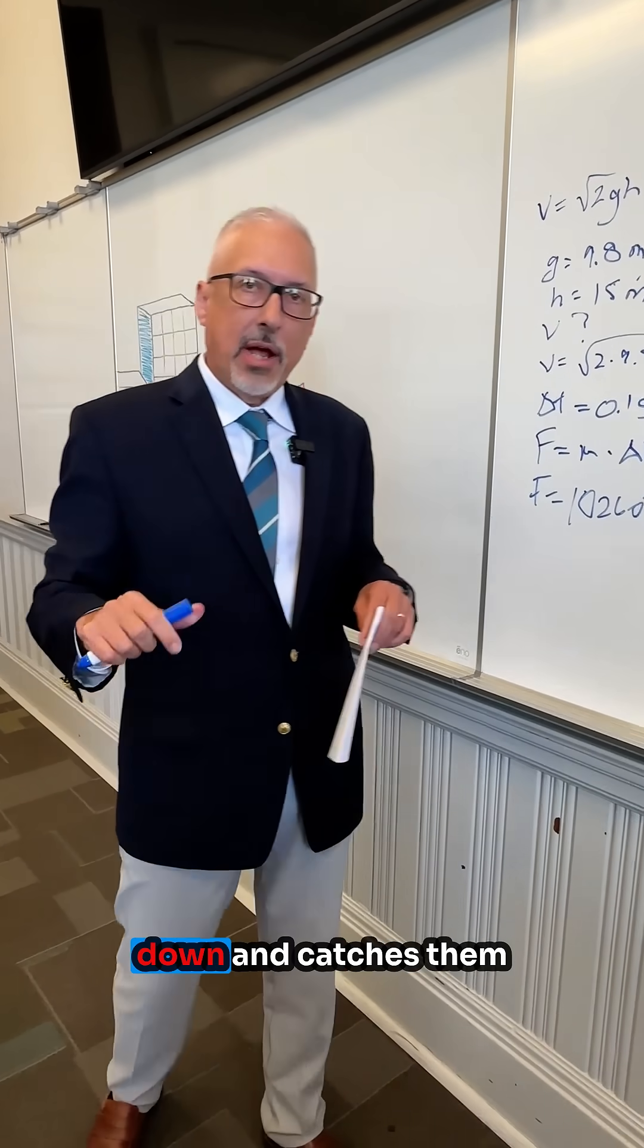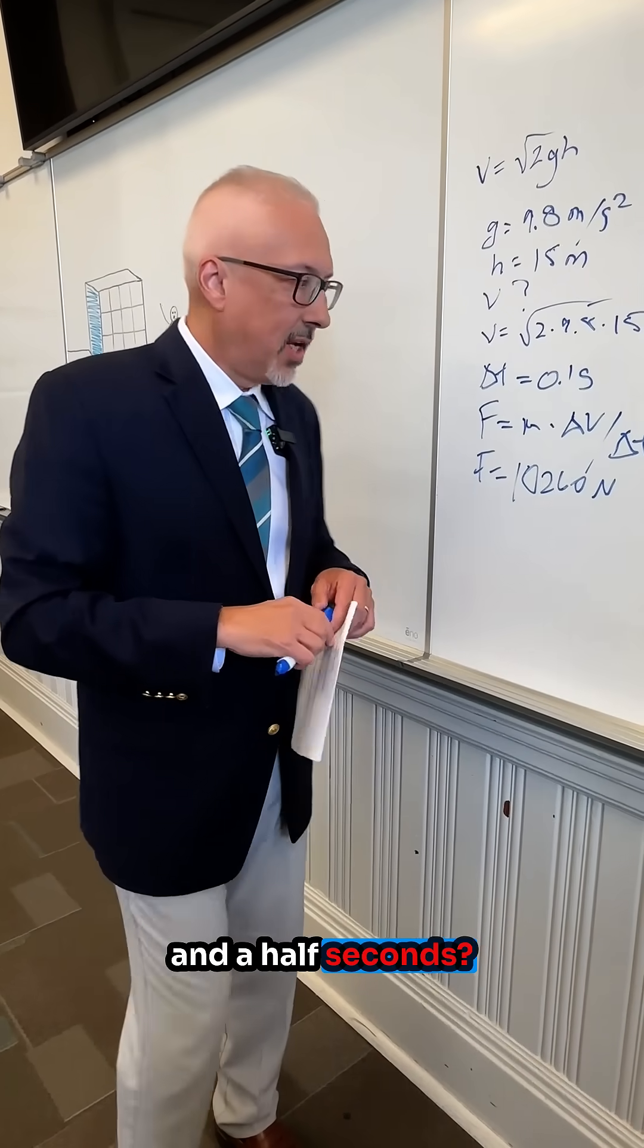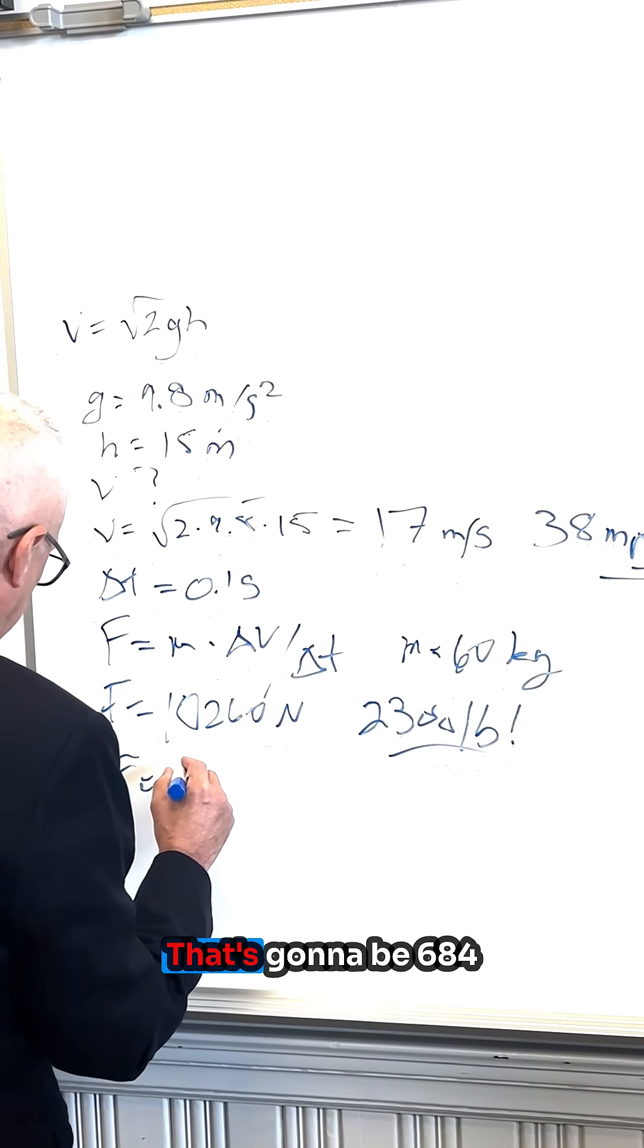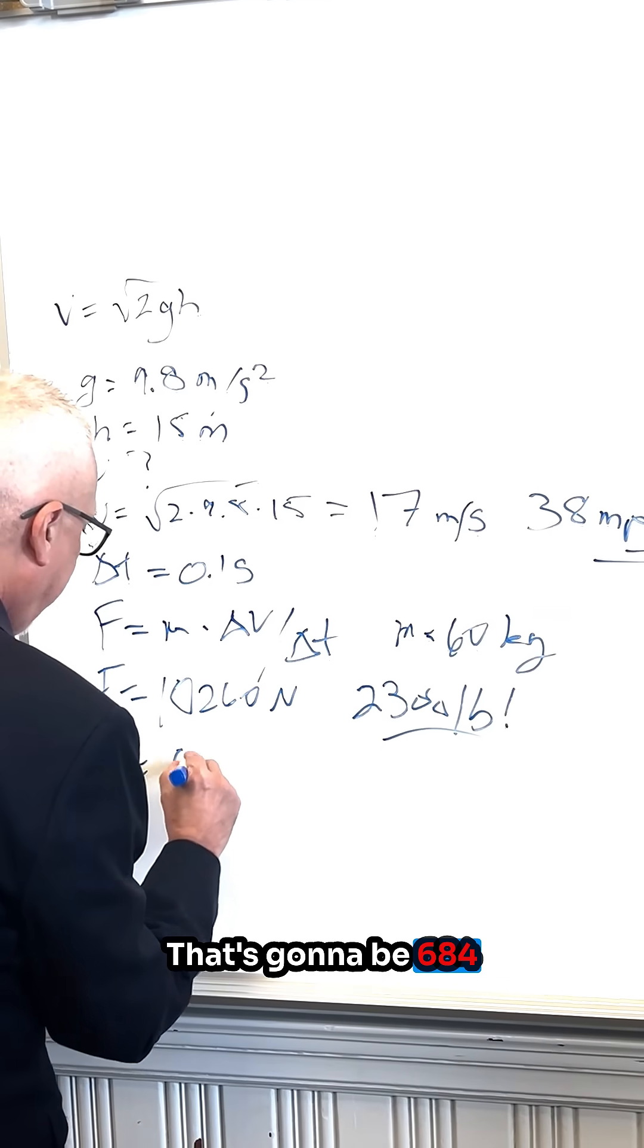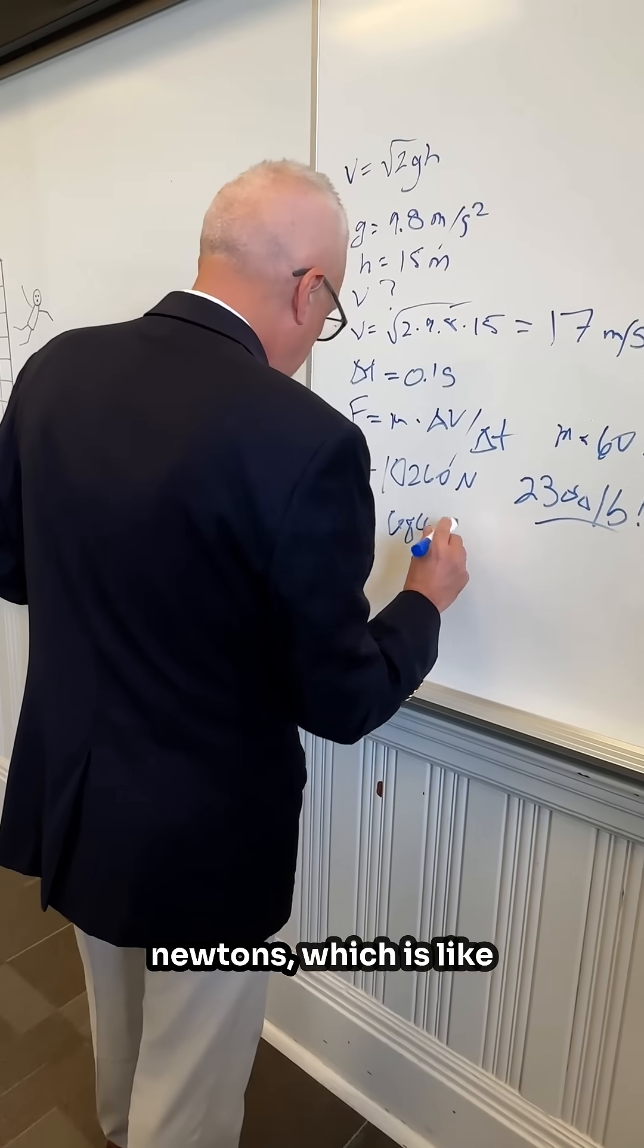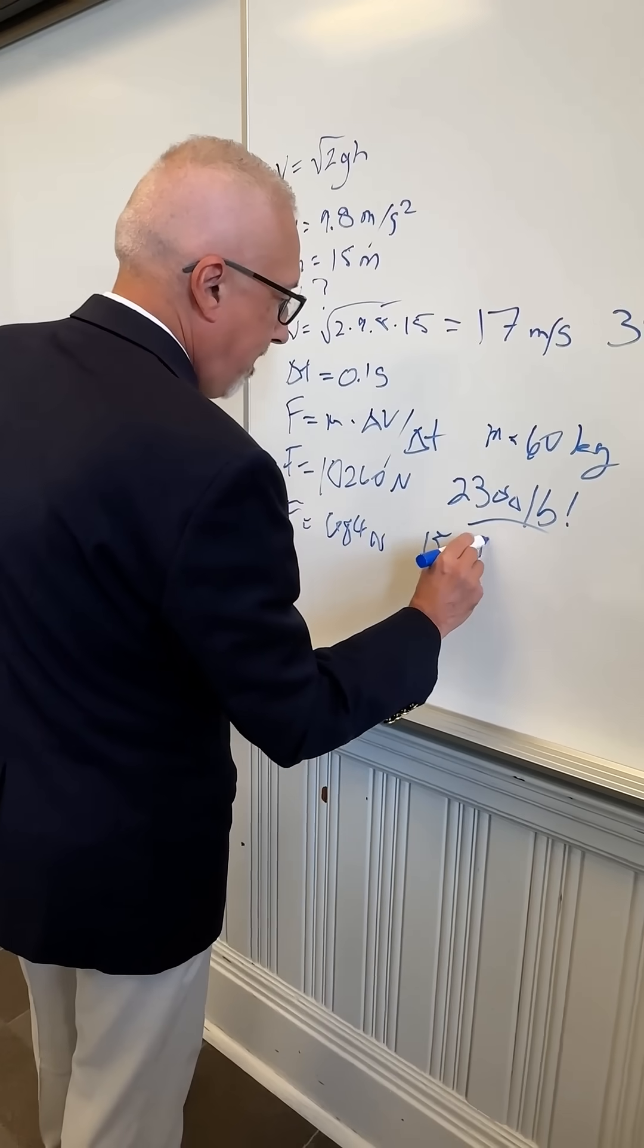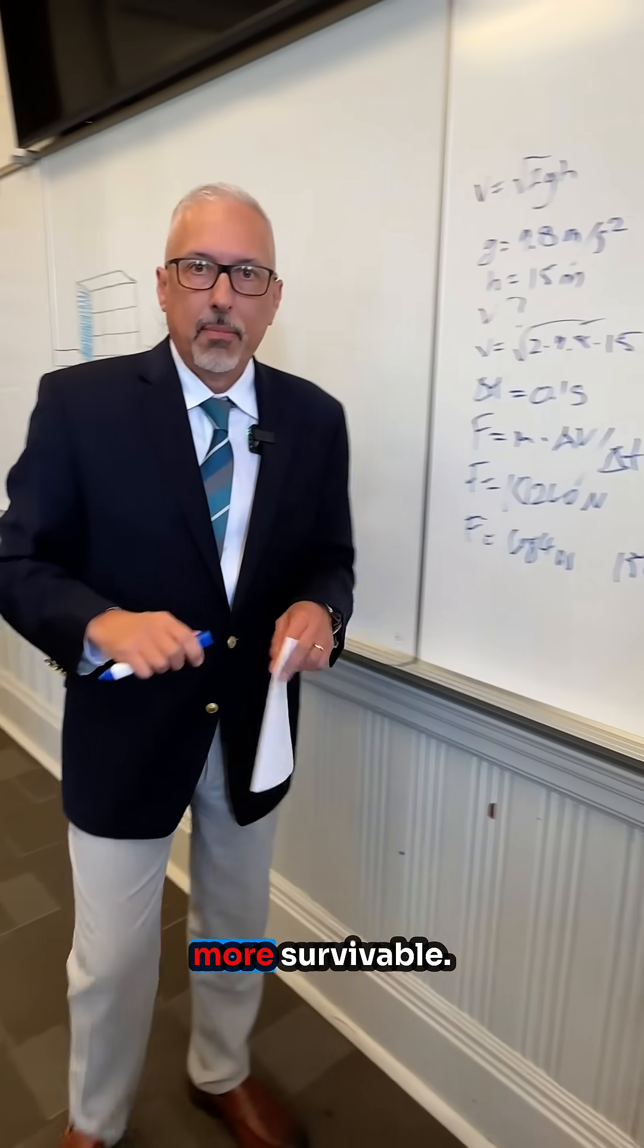What if Superman slows down and catches them more slowly, like in one and a half seconds? Well, then this force is much more manageable. That's going to be 684 newtons, which is like 150 pounds of force. That's a little more survivable.